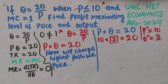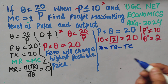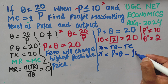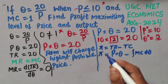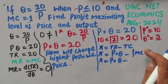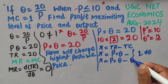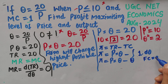Let me explain with an example why p = 10 and q = 2 gives the highest profit. Profit equals total revenue minus total cost, which is price × output minus the integral of the marginal cost function. Since marginal cost = 1, its integral with respect to q is q. Assuming fixed cost = 0, profit = p × q − q.